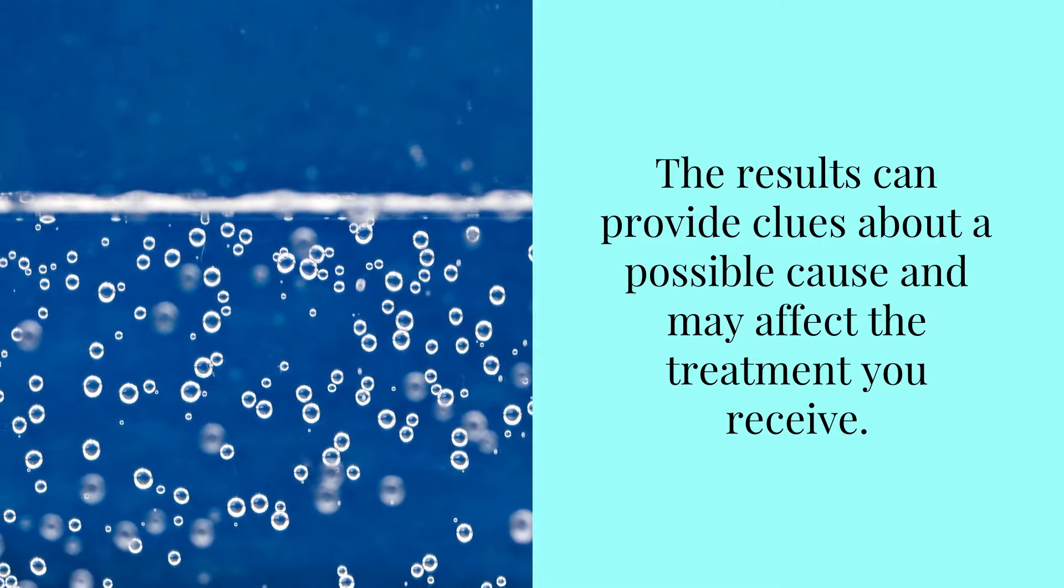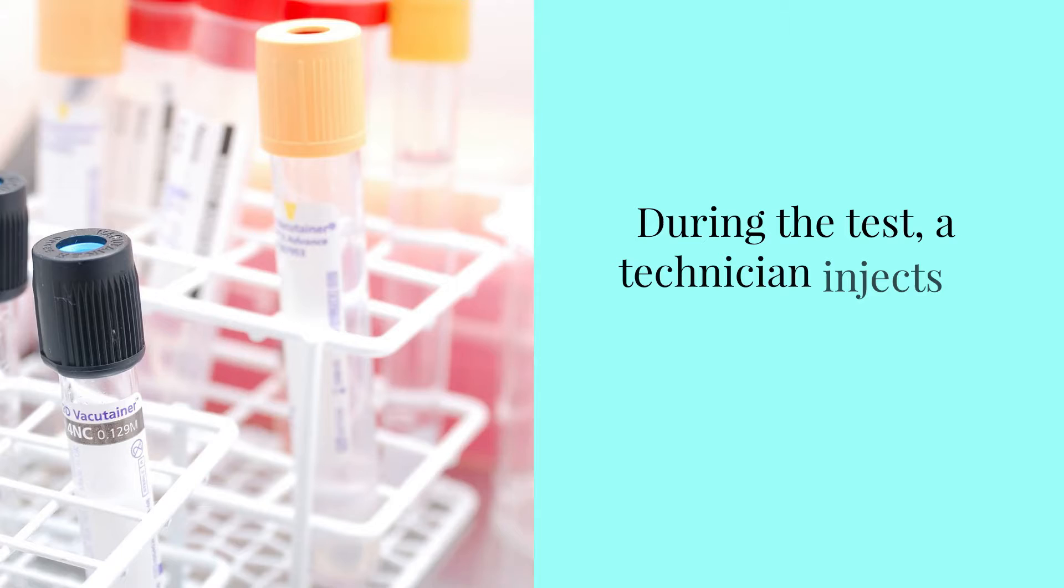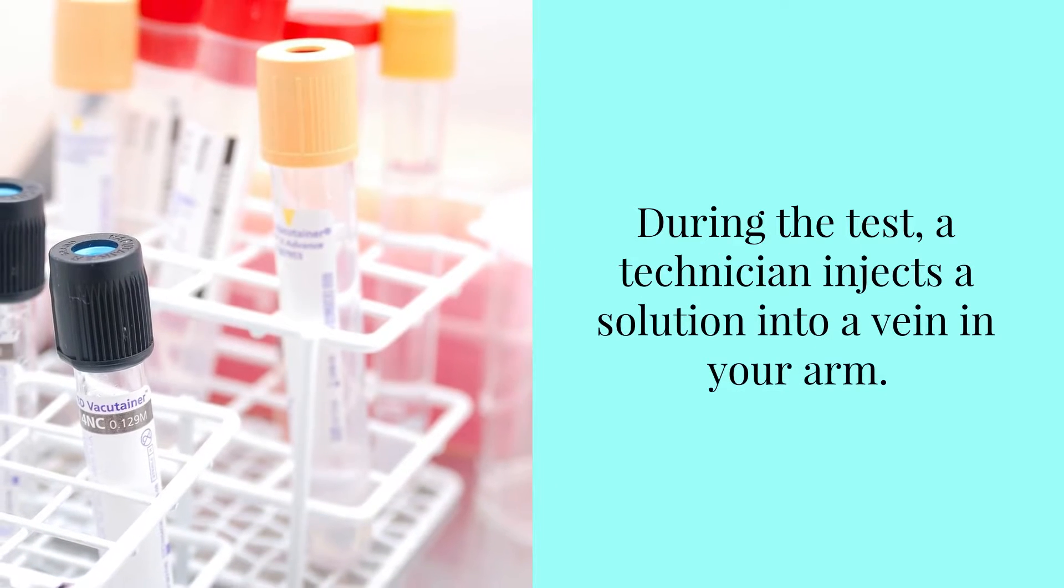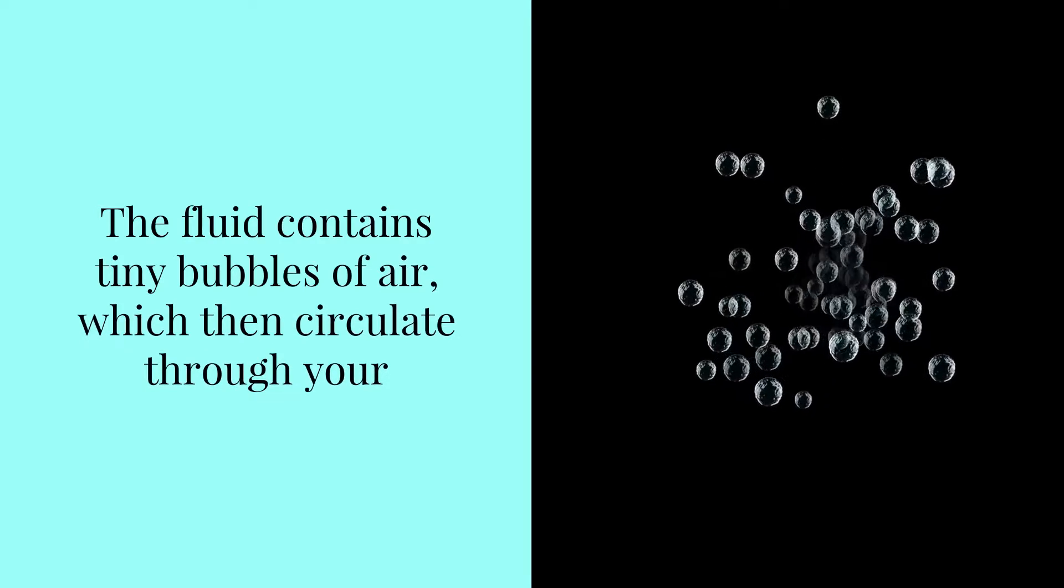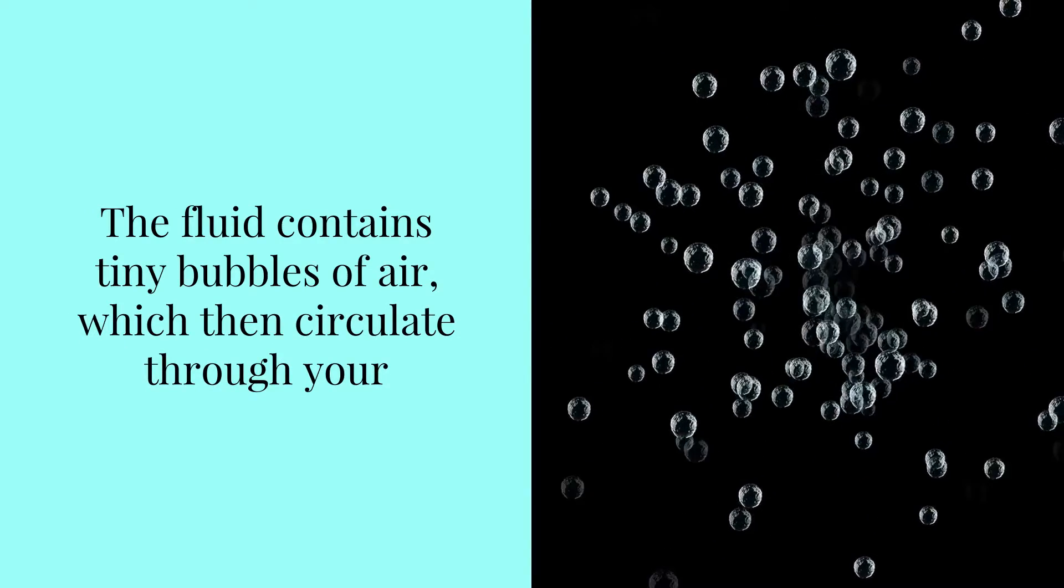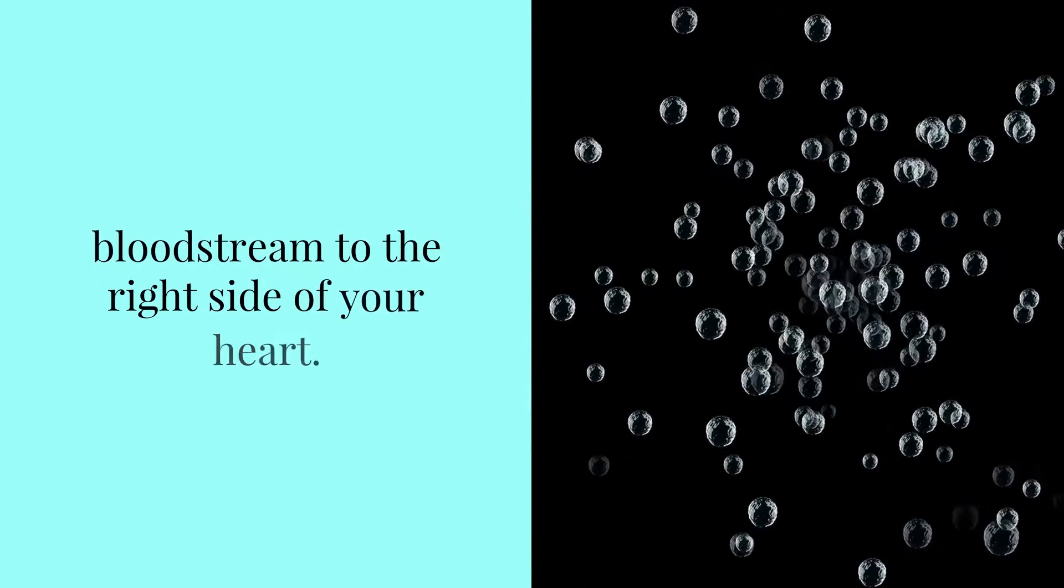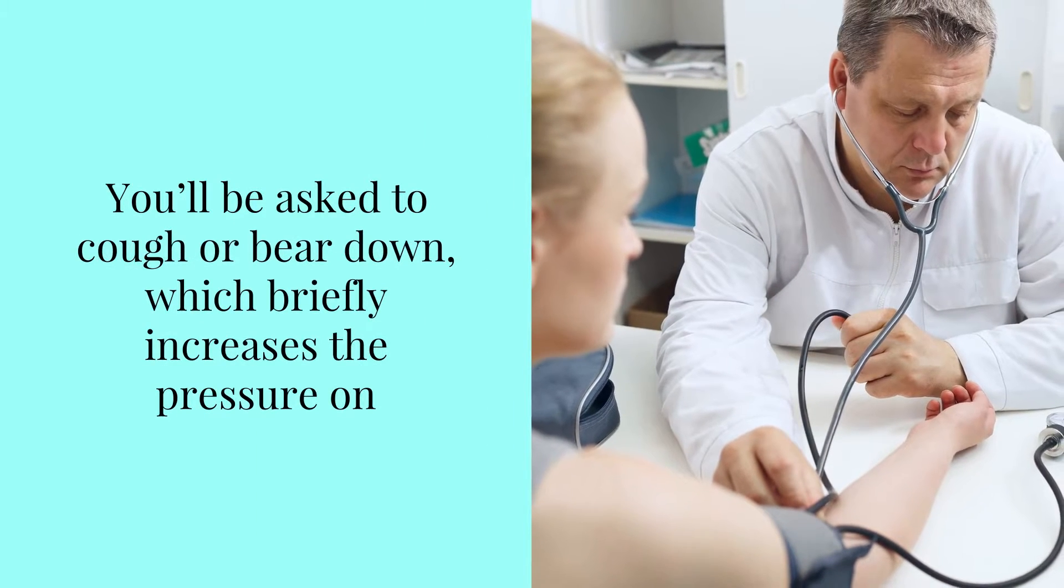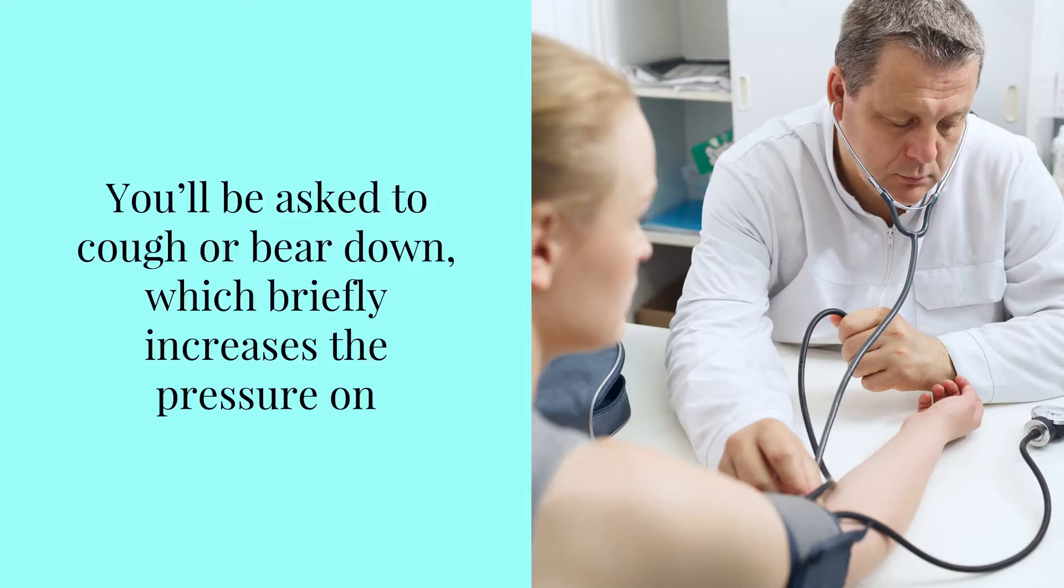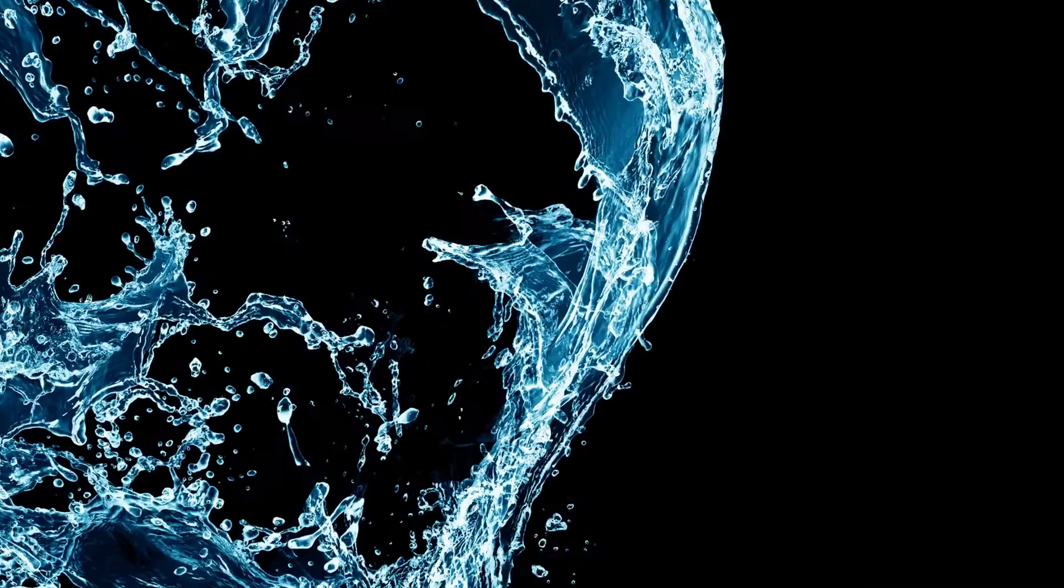And may affect the treatment you receive. During the test, a technician injects a solution into a vein in your arm. The fluid contains tiny bubbles of air which then circulate through your bloodstream to the right side of your heart. You'll be asked to cough or bear down, which briefly increases the pressure on the heart's right side.